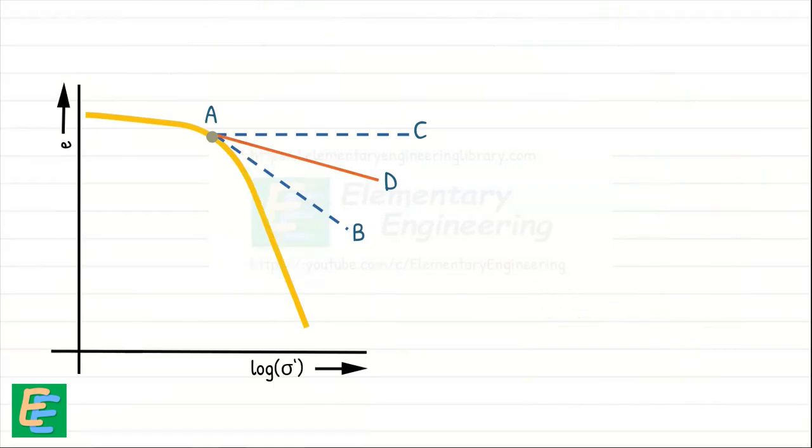After that, we trace back the straight line portion of the curve so that it intersects the bisector AD at point P. We drop a vertical on the log of effective stress axis and that is the pre-consolidation stress as sigma prime C of the soil.